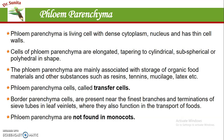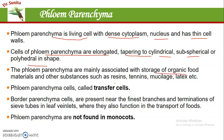The third component is phloem parenchyma. Phloem parenchyma are living cells having dense cytoplasm, nucleus, and very thin cell walls. Cells of the phloem parenchyma are elongated, having pointed ends, or may be cylindrical. They may be subsphericall or polyhedral in shape. The main function of phloem parenchyma is storage of organic food or other substances like resins, tannins, mucilaginous materials, and latex.